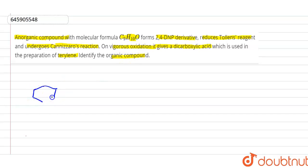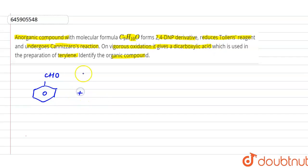In benzene we already have six carbons. It will be connected by an aldehyde group because it reduces the Tollens' test. So the compound has an aldehyde group, and along with that two more carbons will be there. Right now we have seven carbons, so let me discuss the aldehyde group first, then we will decide where to add the two more carbons.